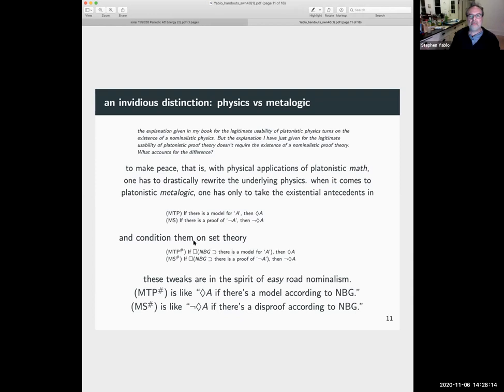So there's this invidious distinction, physics versus metal logic. How can we take the easy road in metal logic or an easier road in metal logic but not physics? The explanation given in my book for the legitimate usability of Platonistic physics turns on the existence of a nominalistic physics. But the explanation I have just given for the legitimate usability of Platonistic proof theory does not require the existence of a nominalistic proof theory. I think other people have sort of observed this earlier in Hartree.